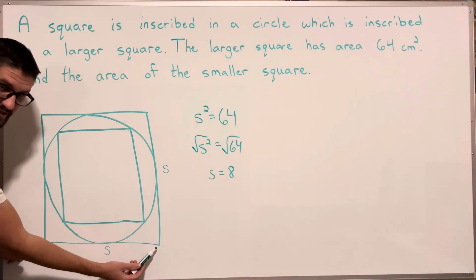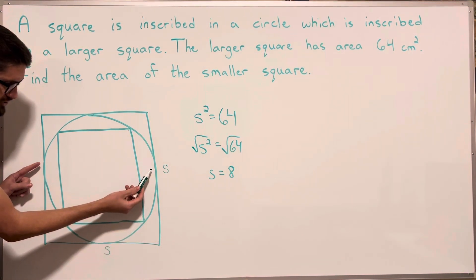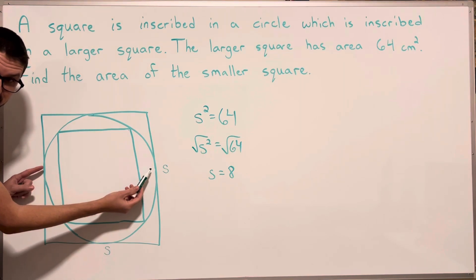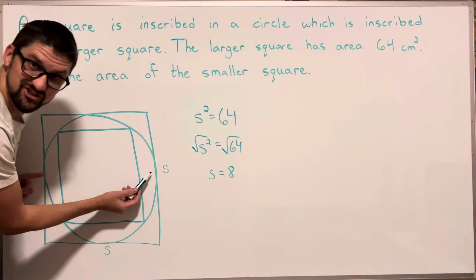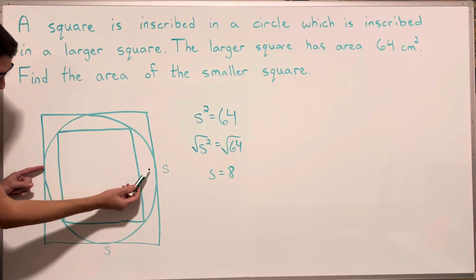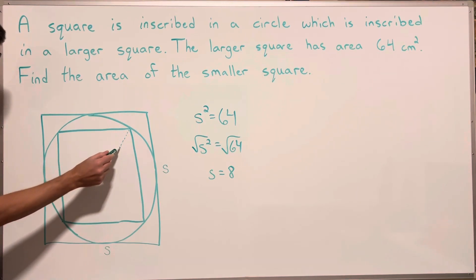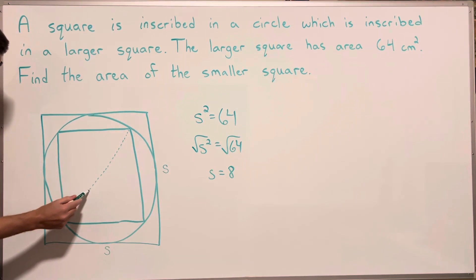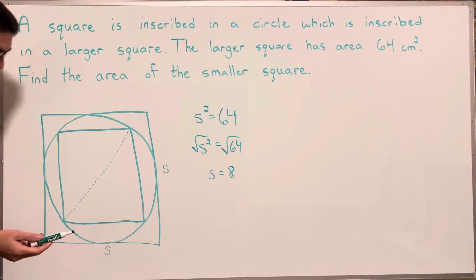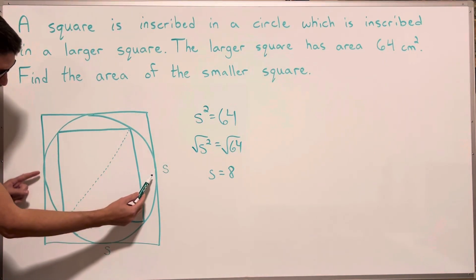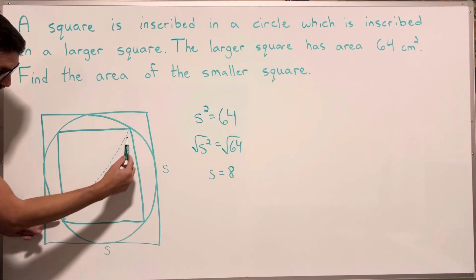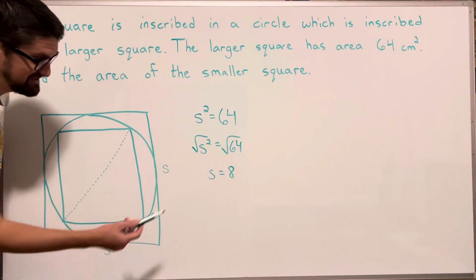Now 8 is this distance which is also the distance of the diameter of the circle. And if you think about it, the diagonal of the inside of the smaller square will also be that same distance, 8.